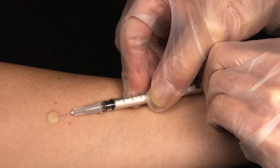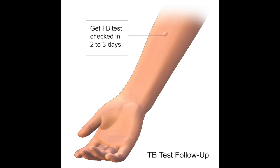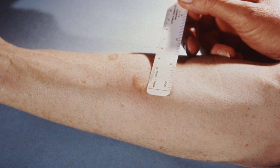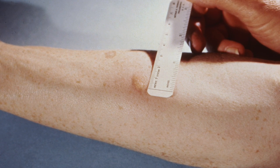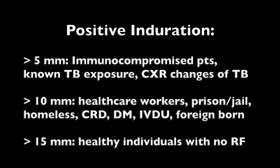First you place the PPD under the skin, creating a wheal, then wait 48 to 72 hours to allow for the body's cell-mediated response to occur, then measure the induration — not the erythema on the skin. Immunocompromised patients like HIV patients test positive at 5 millimeters of induration. Healthcare workers test positive at 10 millimeters of induration, and regular patients at no increased risk test positive at 15 millimeters of induration.